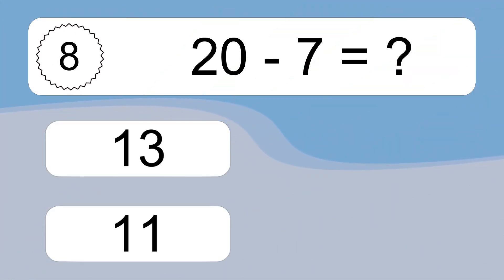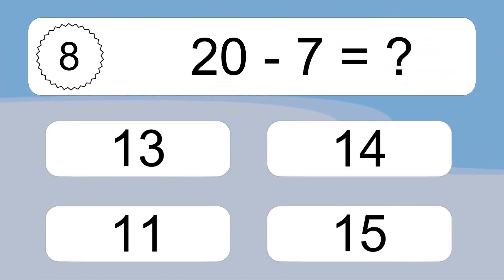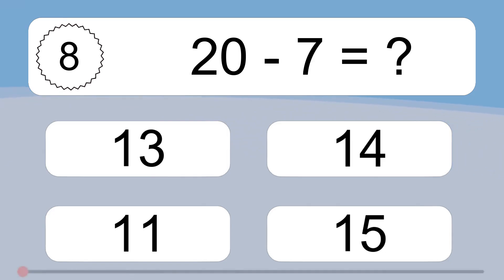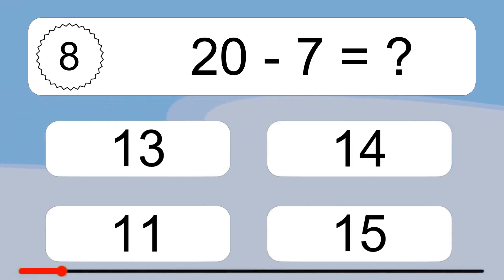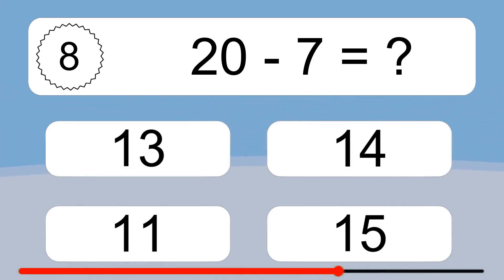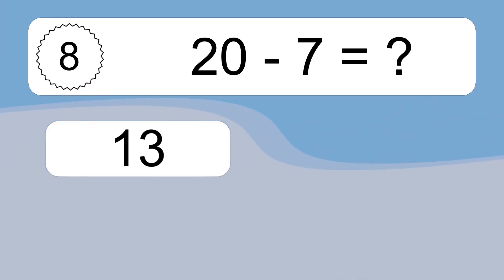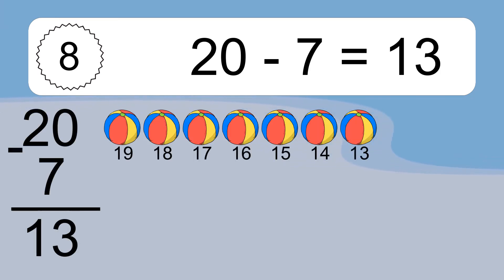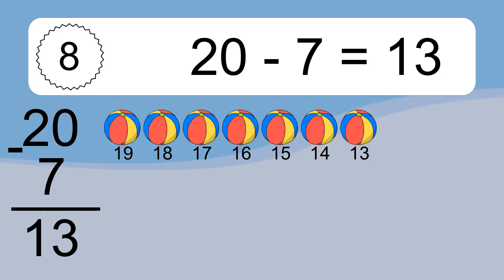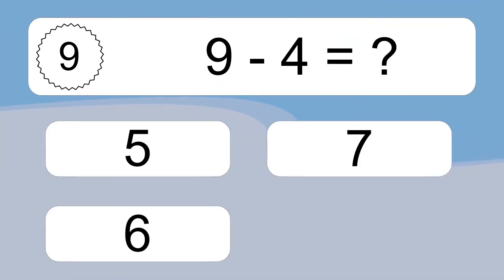20 minus 7 equals what? 20 minus 7 equals 13. Let's count it: 19, 18, 17, 16, 15, 14, 13.